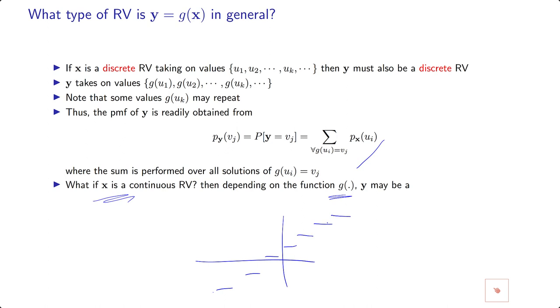But in general, if X is continuous type and G is also differentiable and continuous, then the output is a continuous type random variable.